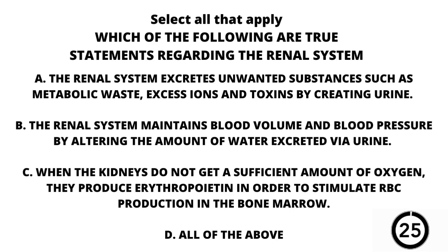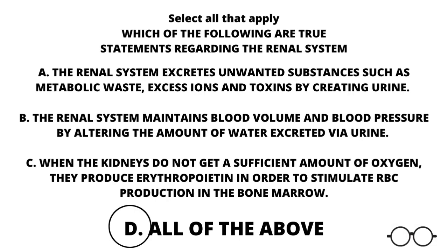Question number 14. This is a select all that apply. Which of the following are true statements regarding the renal system? A, the renal system excretes unwanted substances such as metabolic waste, excess ions, and toxins by creating urine. B, the renal system maintains blood volume and blood pressure by altering the amount of water excreted via urine. C, when the kidneys do not get a sufficient amount of oxygen, they produce erythropoietin in order to stimulate red blood cell production in the bone marrow. D, all of the above. Our answer here is D — all of the above. A, B, and C are all true statements regarding the renal system.